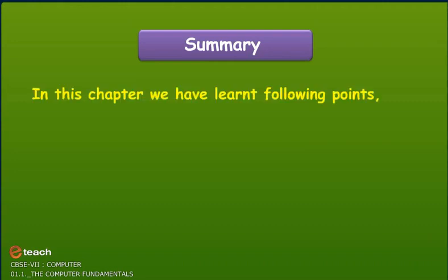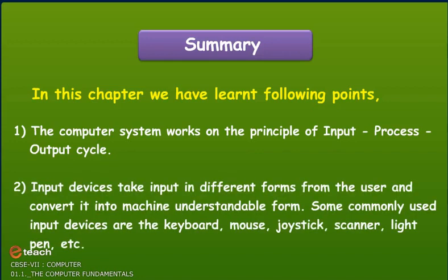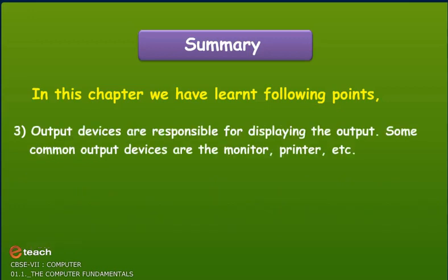Summary: In this chapter, we have learnt the following points. The computer system works on the principle of input, process, output cycle. Input devices take input in different forms from the user and convert it into machine-understandable form. Some commonly used input devices are the keyboard, mouse, joystick, scanner, light pen, etc. Output devices are responsible for displaying the output. Some common output devices are the monitor, printer, etc.